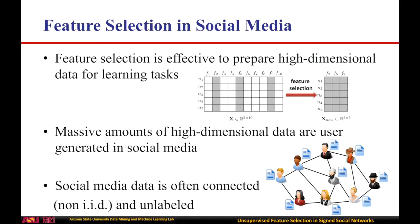Social media data has its distinct properties as it is not independent and identically distributed, but is inherently connected. Also, social media data is often unlabeled. Without labeled information, it is difficult to assess feature relevance.